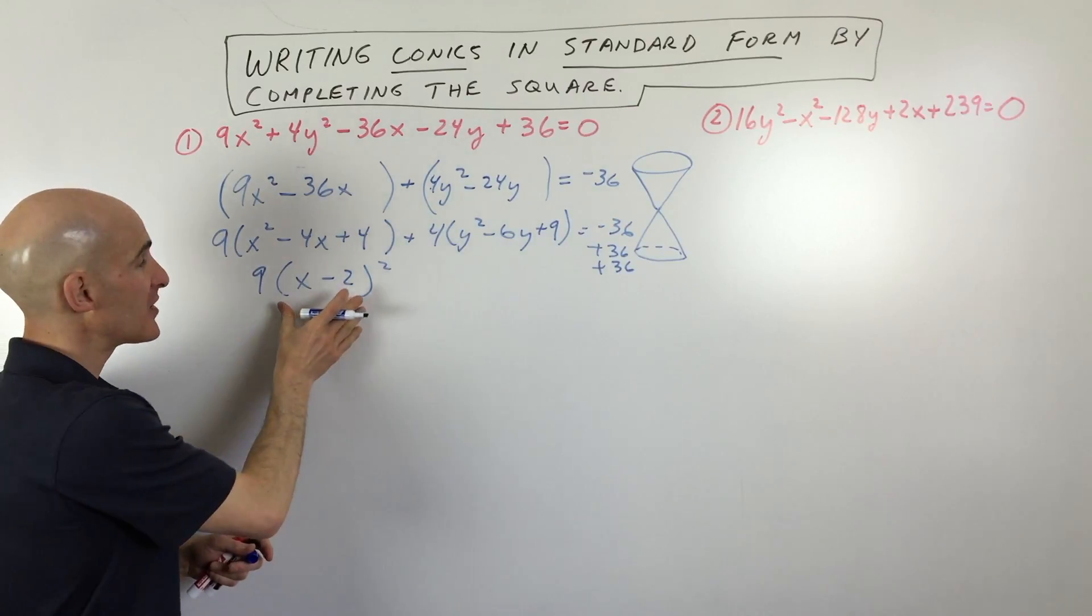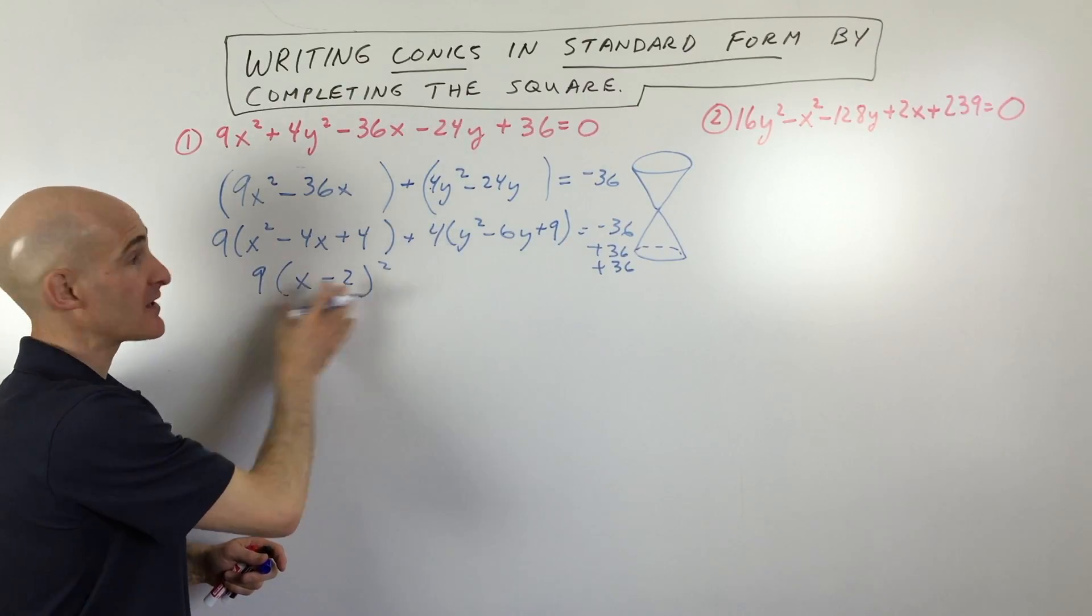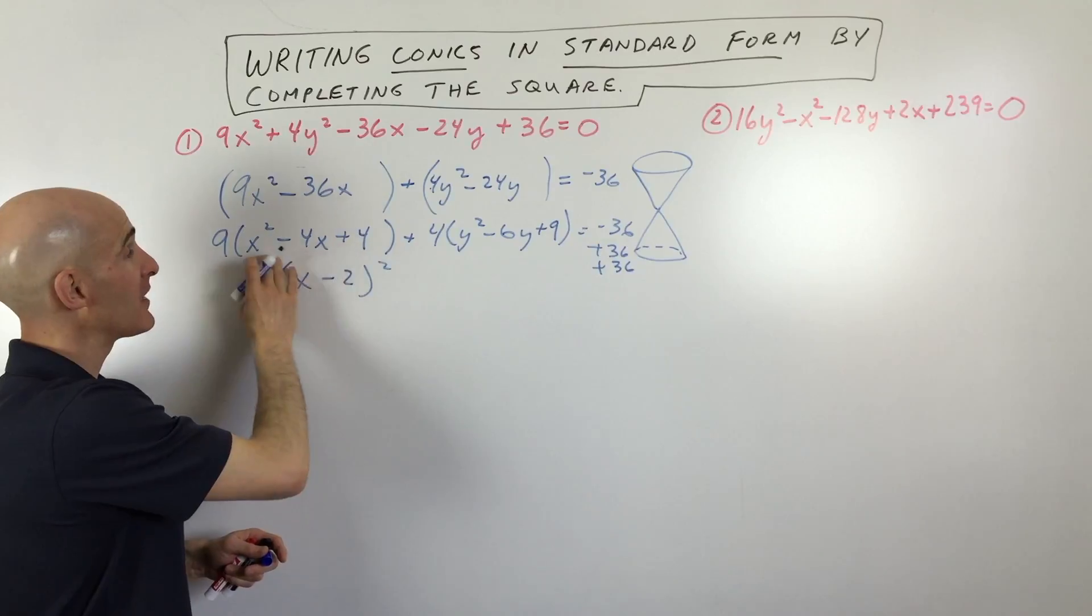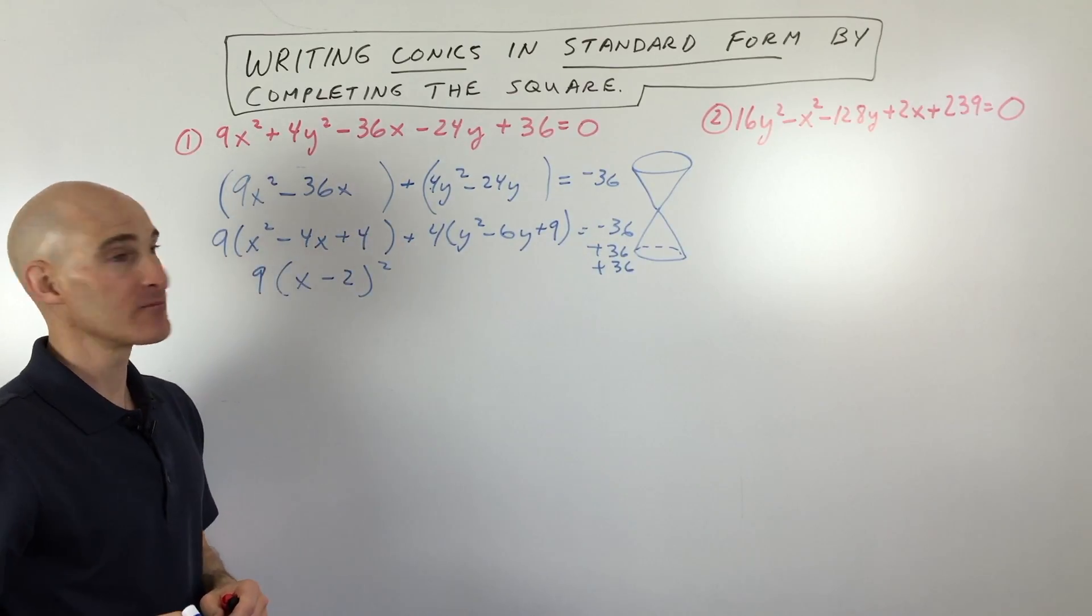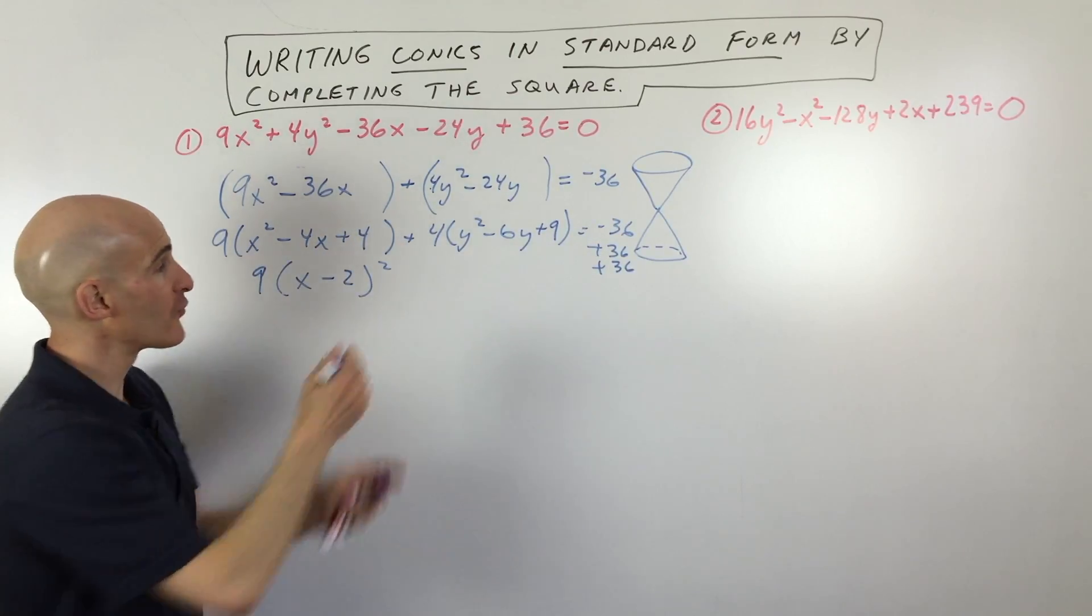If you want to verify this, just go ahead and write x minus 2 times x minus 2, foil it out, multiply it out, and you'll see you get back the original. But this is just a little shortcut. Same thing over here.